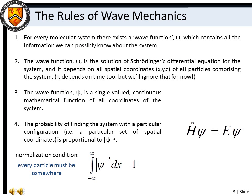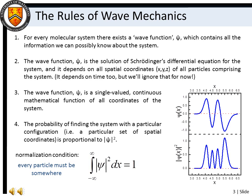The rules of wave mechanics are simple. For every molecular system, there exists a wave function, psi, which contains all of the information we can possibly know about the system. The wave function is the solution to Schrödinger's differential equation for the system, and it depends on all spatial coordinates of all the particles. The wave function must be single-valued and continuous, and the probability of finding a system with a particular configuration is proportional to the square of the wave function. We can also introduce a normalization condition, whereby the square of the wave function, when integrated over all coordinates, must equal 1. Simply put, this means that every particle must exist.